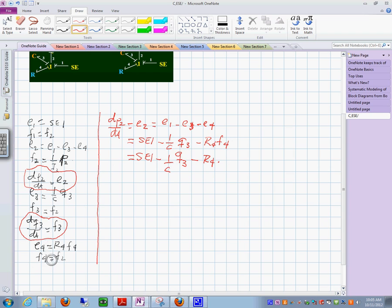And this r sub 4 times f sub 4. What is f sub 4? See here? It's f2. Okay? And finally, I could just make the final substitution equal to SE1 minus 1 over c times q sub 3 minus r sub 4 times 1 over i sub 2. This form, I am going to get a different color just to emphasize my point.